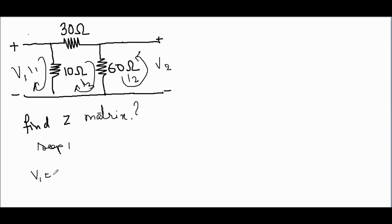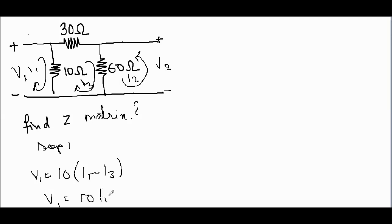Now apply KVL to loop 1. We get V1 is equal to 10(I1 minus I3), so the equation will be: V1 = 10·I1 minus 10·I3.